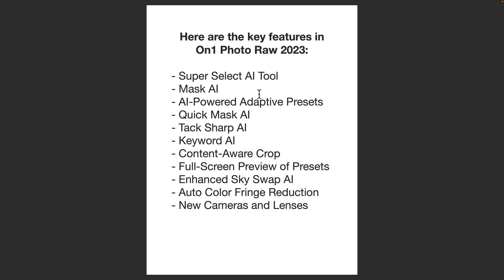There's full-screen preview of presets — I demoed that in my AI adaptive presets video, showing how it gives you a preview as you hover over them. They have enhanced SkySwap AI. Older versions of ON1 had SkySwap AI, and what they've done is improved it — it works much better and faster, and they've added 125 built-in AcuDrone Skies. Those of you who watch my videos know I've been touting AcuDrone Skies as the best on the market, and apparently ON1 agrees. They also have Auto Color Fringe Reduction and added support for new cameras and lenses, as they do with every update.